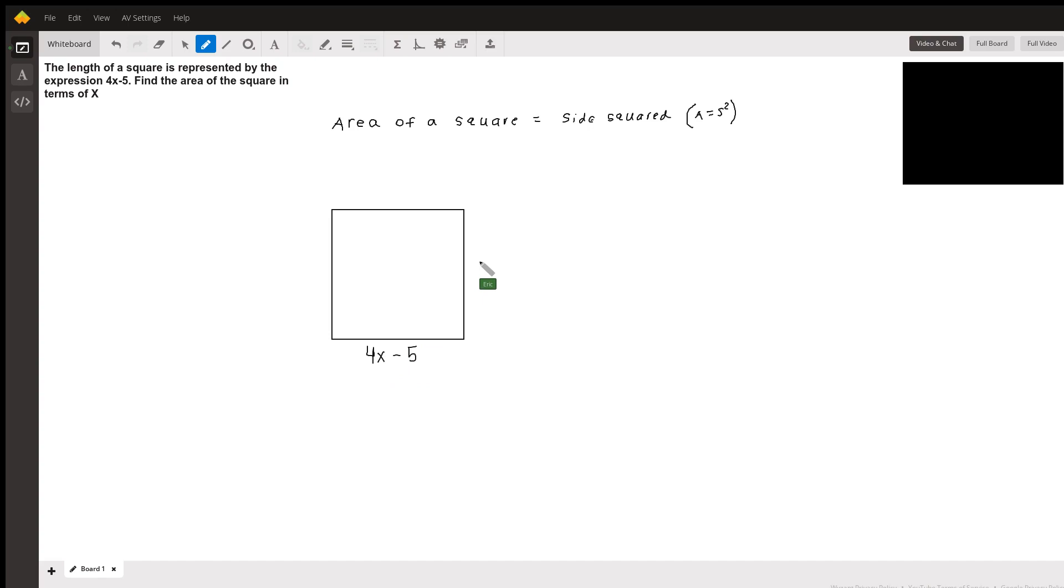So here's the length, so the width will also be equal to 4x-5. So the length is equal to 4x-5 and the width is equal to the same thing.